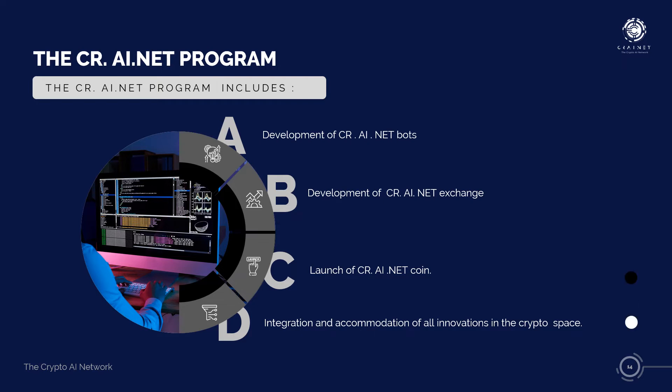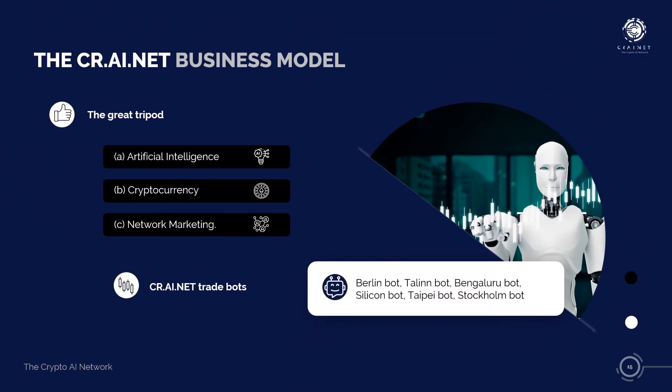The CrayNet program is the very first crypto AI project that harnesses the power of network marketing to completely utilize presently available AI tools, which were previously designated strictly for private use, to generate the funds required for R&D of the greatest one-stop marketplace for crypto and AI. The CrayNet project includes: 1. Development of the CrayNet bot. 2. Development of the CrayNet exchange. 3. Launch of the CrayNet coin as a token. 4. Utilizing the CrayNet exchange to accommodate all innovations in the crypto AI space. CrayNet has earmarked $500 million for R&D of the CrayNet marketplace, with the business model hinging on pooling a percentage of accrued trading profits. The CrayNet business model is built on a great tripod: artificial intelligence, cryptocurrency, and network marketing.